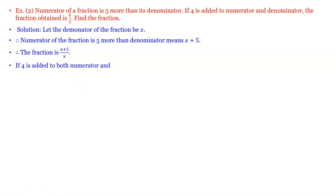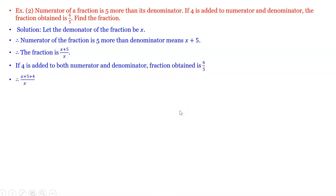The condition given is that 4 is added to both the numerator and denominator. The fraction obtained is 6 by 5. Therefore (x plus 5 plus 4) upon (x plus 4) is equal to 6 by 5, which simplifies to (x plus 9) upon (x plus 4) is equal to 6 by 5.